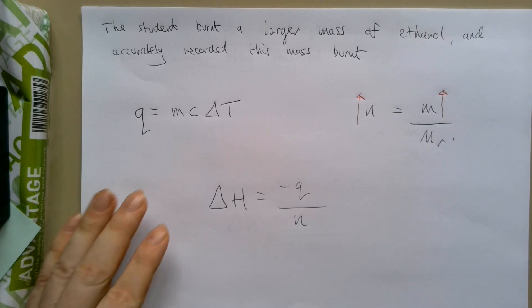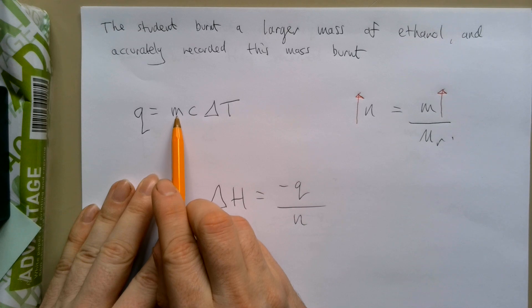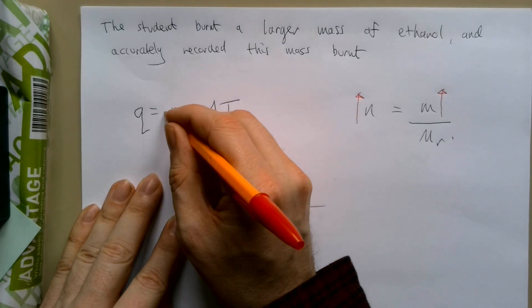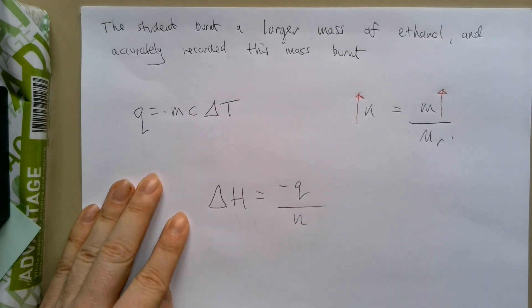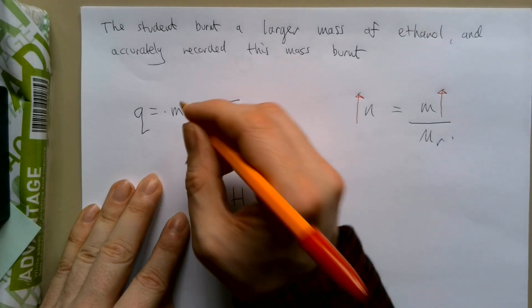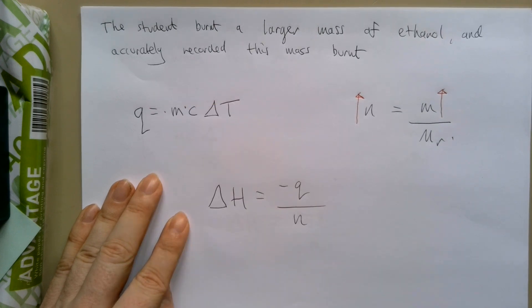Welcome back. Let's have a look then. This is the mass of the solution. Now our ethanol was not being added to the solution, so by burning a larger mass of ethanol, we have not affected the mass of the solution. We've also not affected the specific heat capacity of the solution.